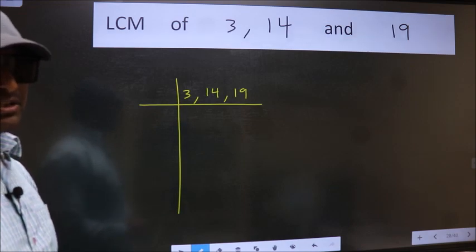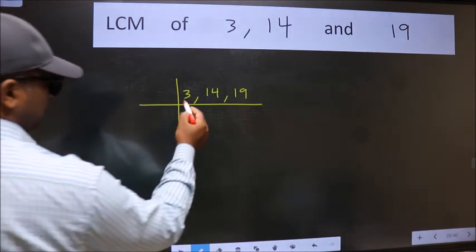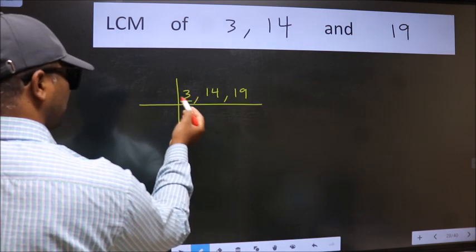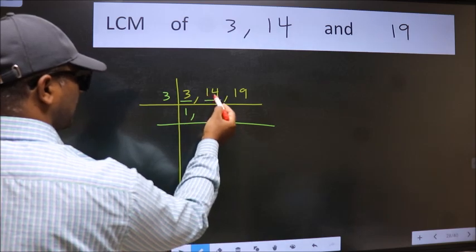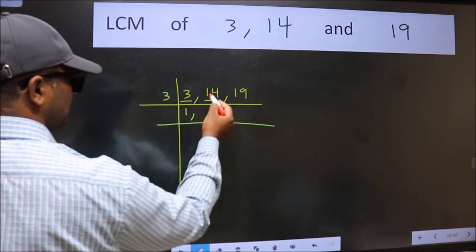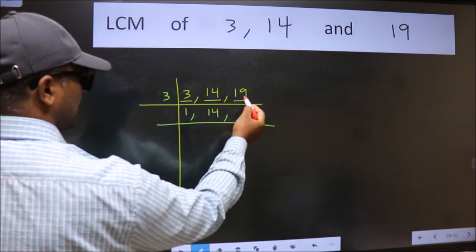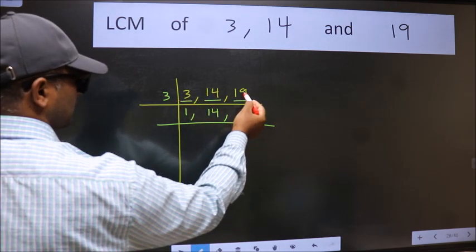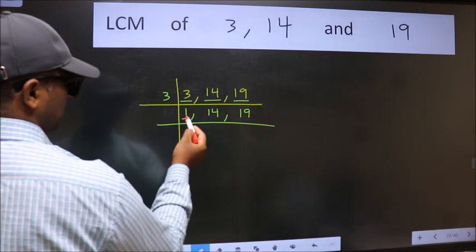Now we should focus on the first number which is 3 here. 3 is a prime number so 3 goes into 3. The other number 14 not divisible by 3 so we write it down as it is. The other number 19 not divisible by 3 so we write it down as it is. Now we got 1 here.